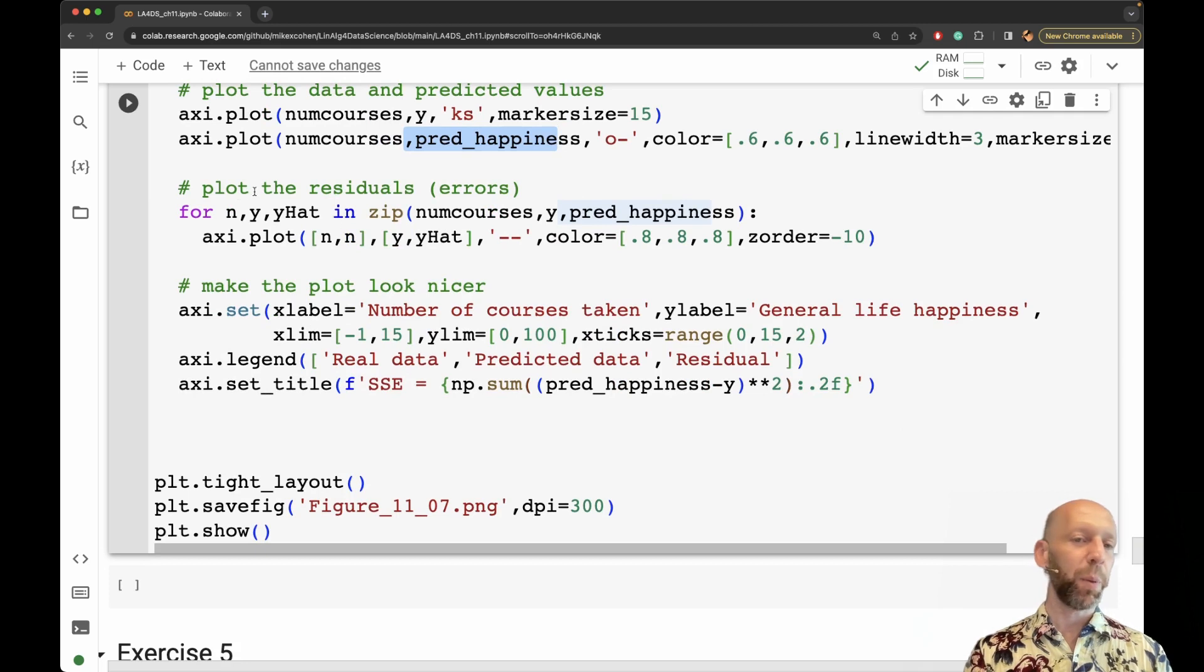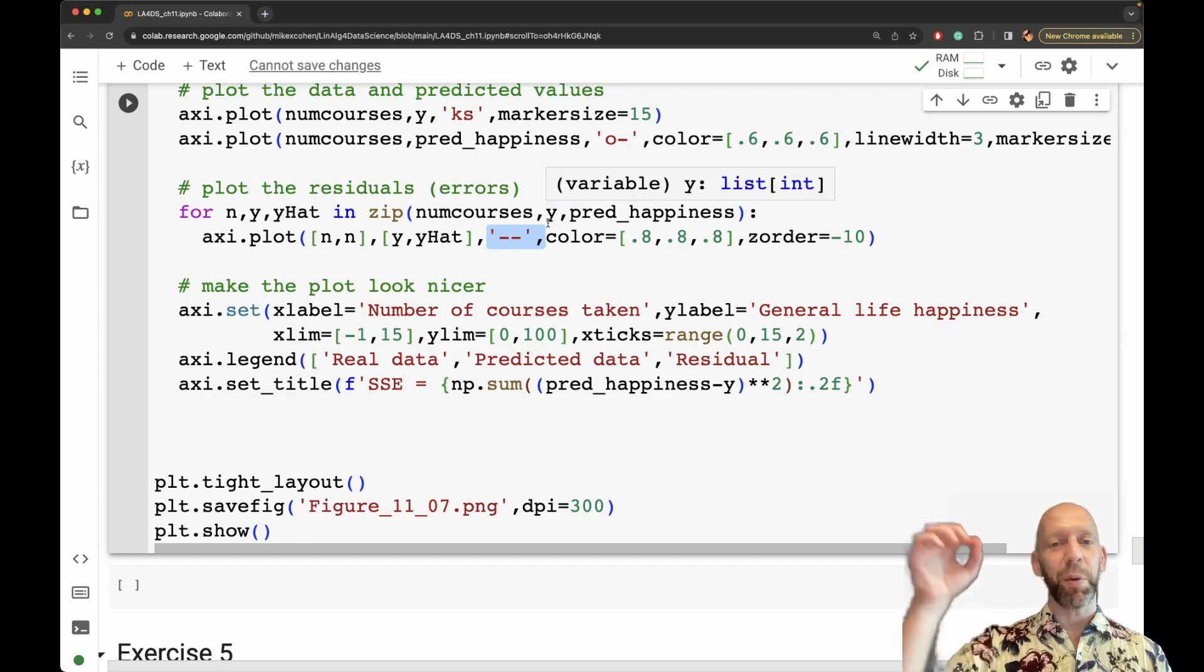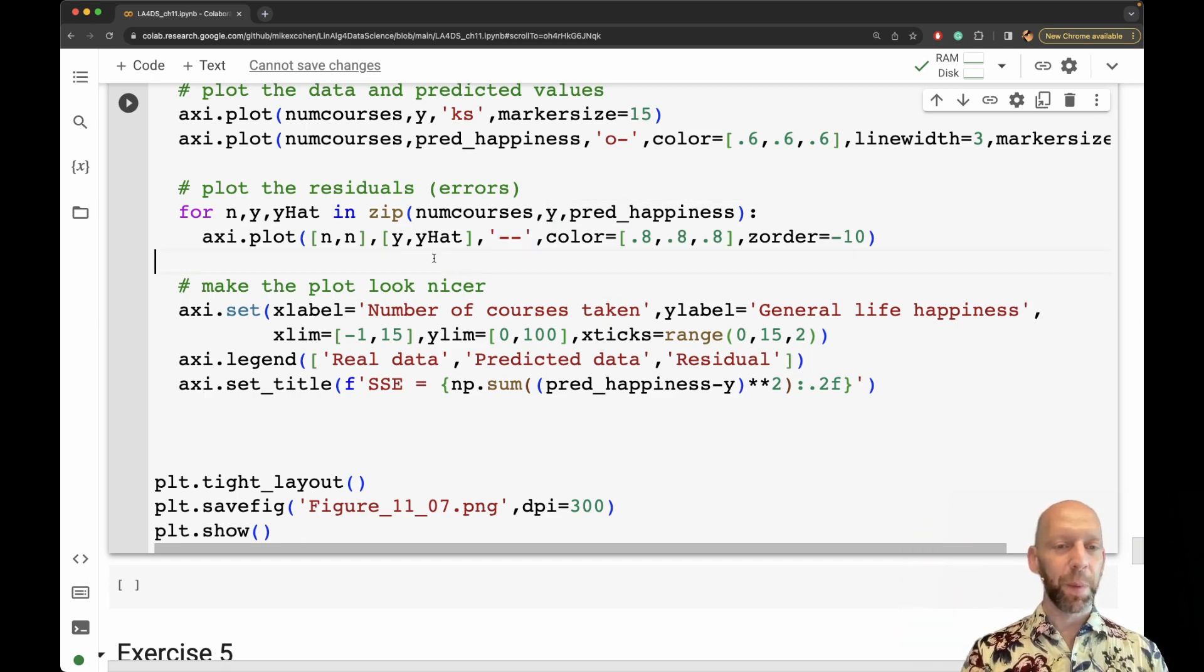And then here I'm plotting the residuals. It's in a for loop again using zip. And that's because I'm plotting each data value separately, because I want to draw this vertical line that goes from the data point to the predicted value. And then just a couple of things to make the plot look nicer.